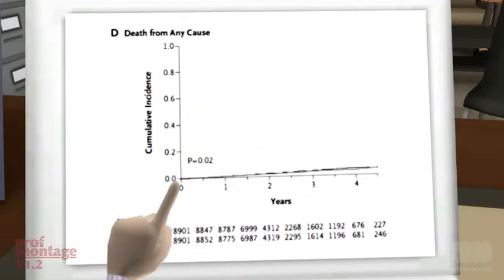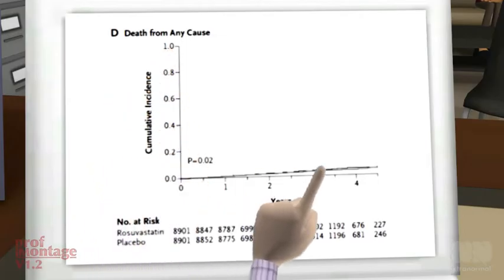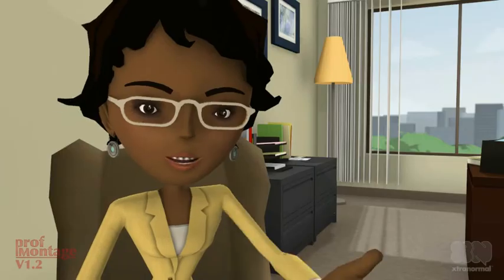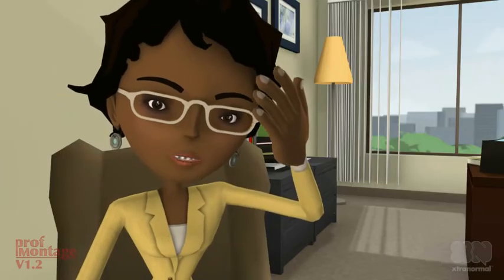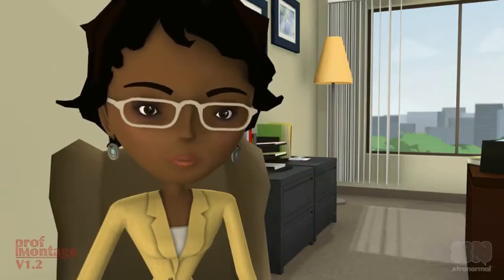When you show from 0 to 100%, you get a different impression. So when we look at a survival curve, we need to watch out for a cut-off y-axis.